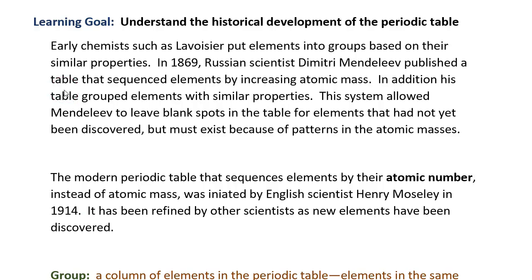Let's take some notes on that learning goal. Understand how the periodic table came to be. Early chemists such as Lavoisier put elements into groups based on their similar properties. In 1869, Russian scientist Dmitry Mendeleev published a table that sequenced elements by increasing atomic mass.